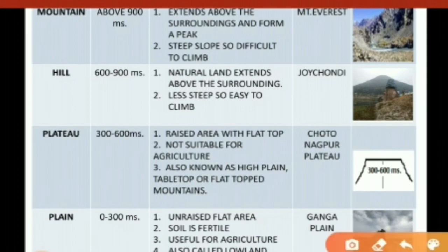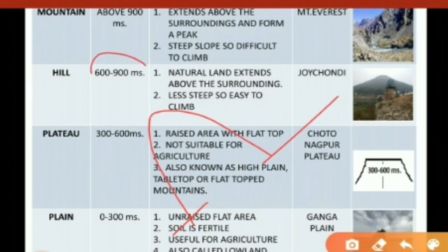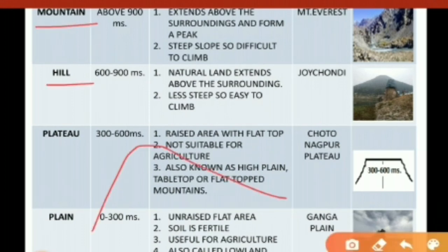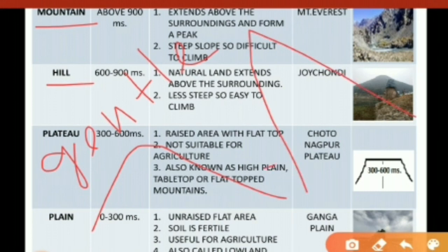Next, hills: if a particular region is higher than its surroundings, that land area is simply known as hills, with a height between 600 to 900 meters. If that land is more than 900 meters, it should be a mountainous region. The most important difference between mountains and hills is that hills have a gentle slope, while mountains have a very steep slope.